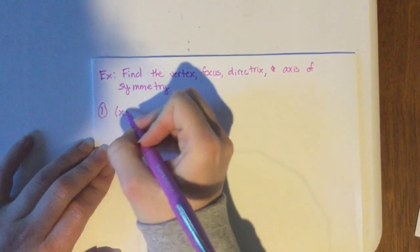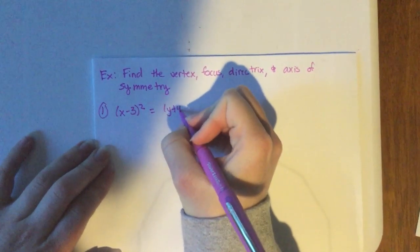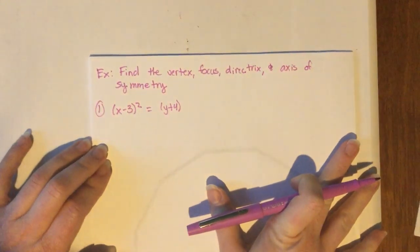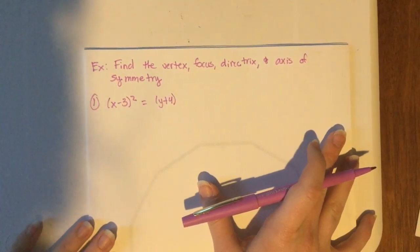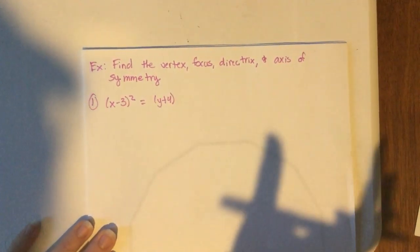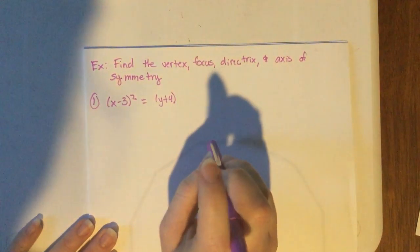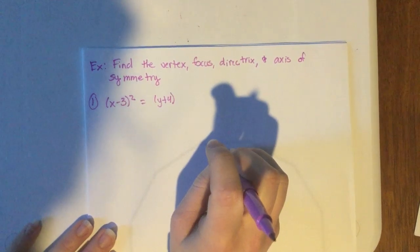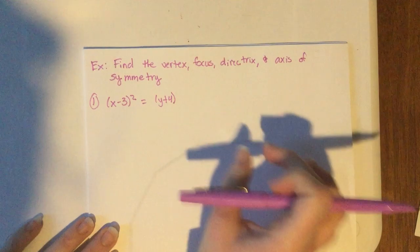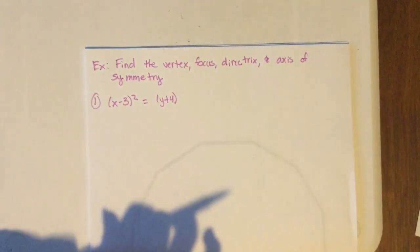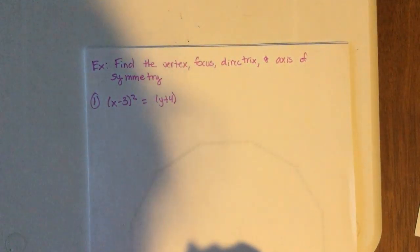We have (x minus 3) squared equals the quantity (y plus 4). Take two seconds and decide: is this going to be a parabola that faces up and down, or left and right? Then think about whether it's positive — going up or right — or negative — going down or left.